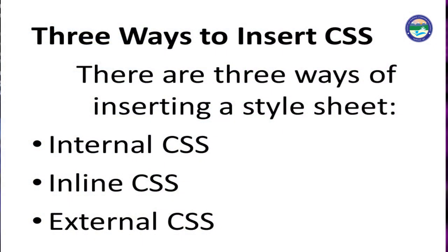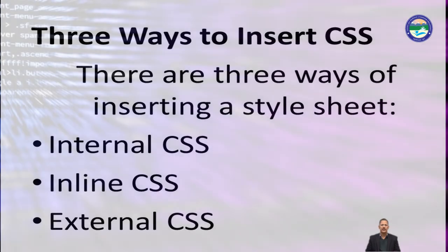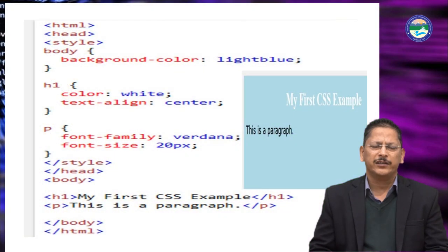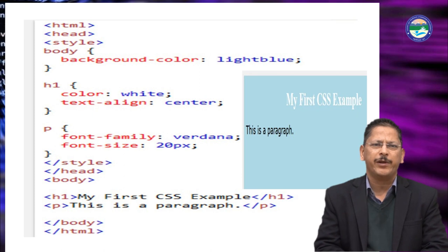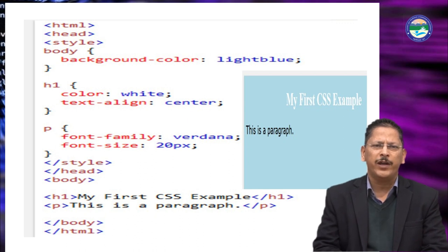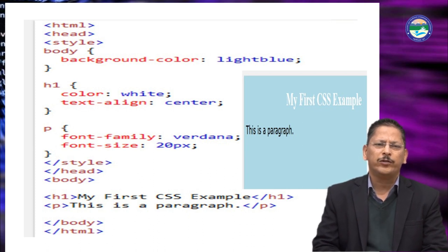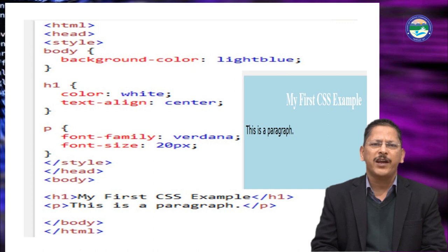There are three types of CSS: internal CSS, inline CSS, and external CSS — three ways of inserting a style sheet. This is an example of an internal style sheet. The HTML starts, then head, then style. Inside body we define background color as light blue. For heading 1, color is white and text-align is center. For paragraph, font-family is Verdana and font-size is 20px.